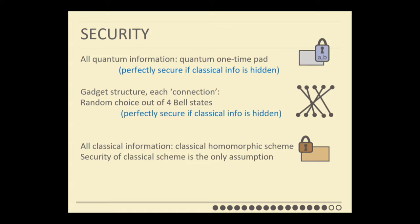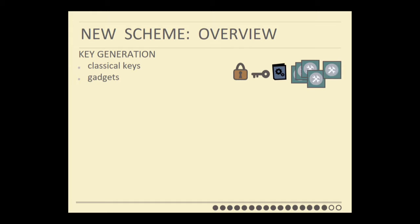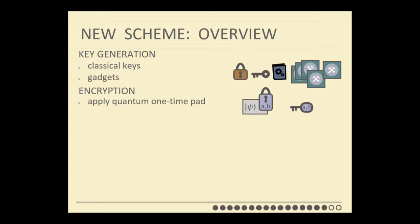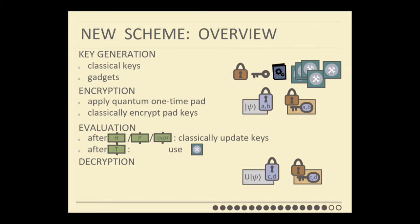A quick overview of how the scheme works in total. Key generation: generate the classical keys, and Alice generates a bunch of gadgets depending on how many computations the cloud should perform. Encryption: apply the quantum one-time pad, then classically encrypt the pad keys. Evaluation: after a Clifford gate, update the keys exactly as in the Clifford scheme; after a T gate, use the gadget to correct. Decryption: after everything is done, the state is still in the same form — use classical decryption to recover the quantum one-time pad key, then decrypt the quantum state.